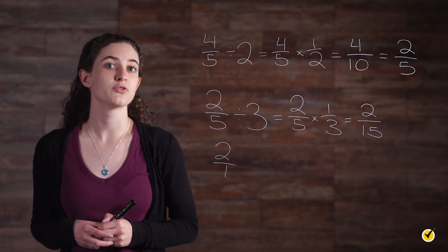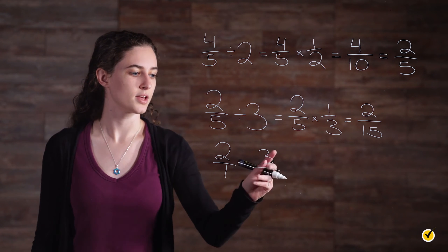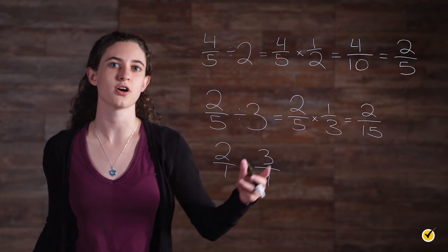The same can be said of 3 and 1 third, because 3 can be written as 3 over 1. Therefore, 3 and 1 third are reciprocals. With this in mind, what pattern do you see in the process for dividing fractions?